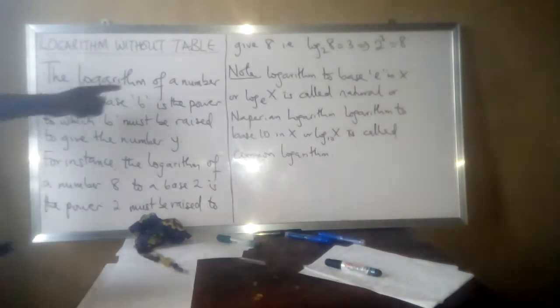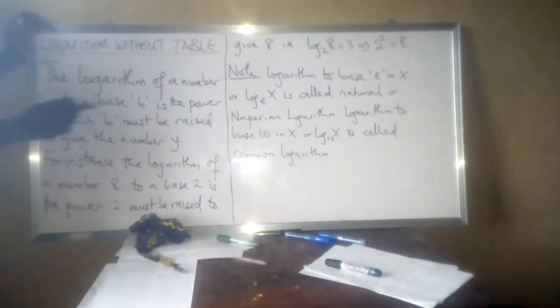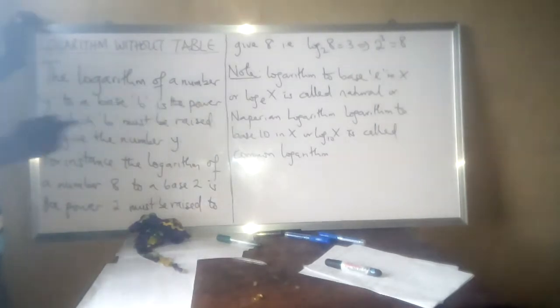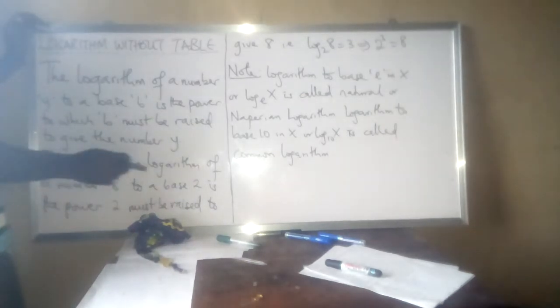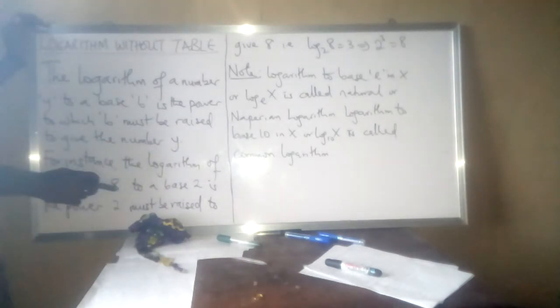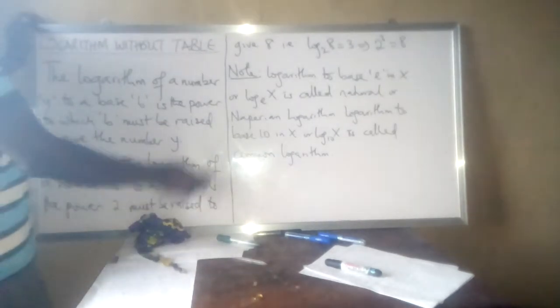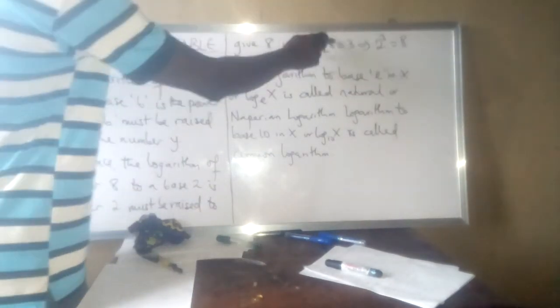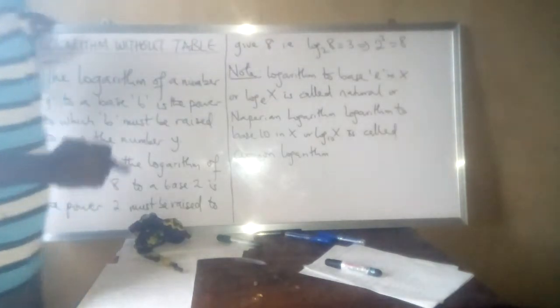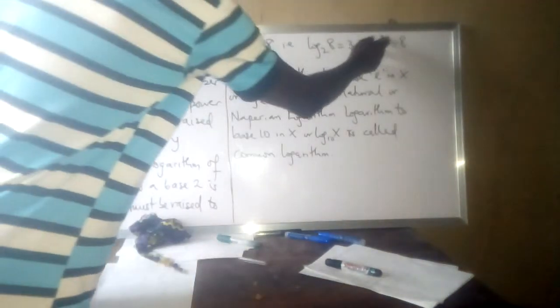The logarithm of a number y to a base b is the power to which b must be raised to be the number y. For instance, the logarithm of a number 8 to a base 2 is the power 2 must be raised to give 8. That is, log 8 base 2 is equal to 3, which means 2 raise power 3 is equal to 8.